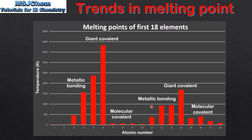For period 3, sodium, magnesium and aluminium all have metallic bonding. Silicon has a giant covalent structure. And the remaining elements — phosphorus, sulfur and chlorine — have molecular covalent structures. The elements in group 18, that's the noble gases neon and argon, exist as individual atoms.